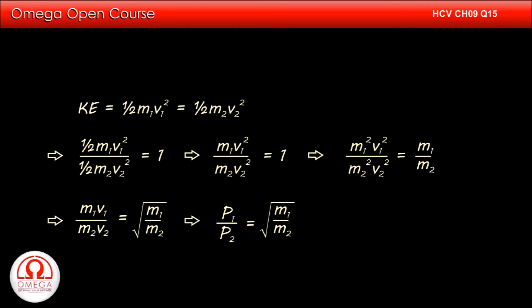But mass into velocity is momentum. Therefore, m1v1 is momentum of 1 kg particle and m2v2 is momentum of 4 kg particle. Thus, p1 by p2 is equal to root m1 by m2.